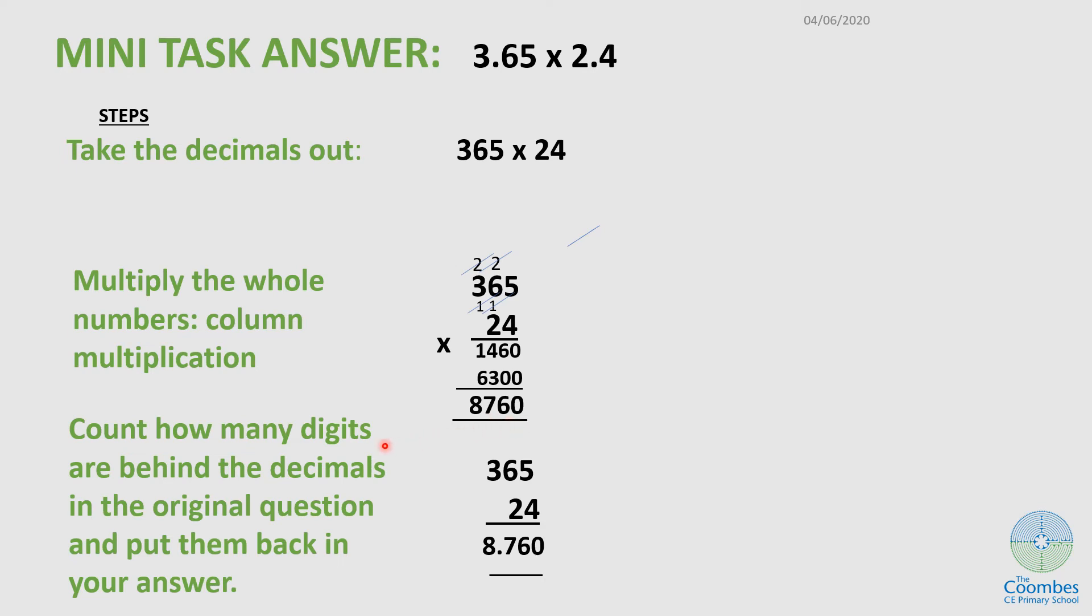To get my answer, I have to count the number of digits behind the decimal in the original question and put them back. If I go back to my original question, the number of digits behind the decimal point here is 1, 2, and then this one has 1. So 1, 2, 3. So I'm going to put back 3 decimal points in my answer.